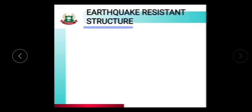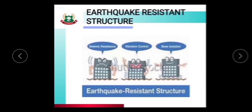Now we will discuss about Earthquake Resistant Structures. This is the image of an earthquake resistant structure. Any earthquake resistant structure should have seismic resistance power, vibration control, and base isolation. Base isolation means that even if an earthquake occurs, the structure will move horizontally and may collapse after some time, but it will not suddenly collapse.